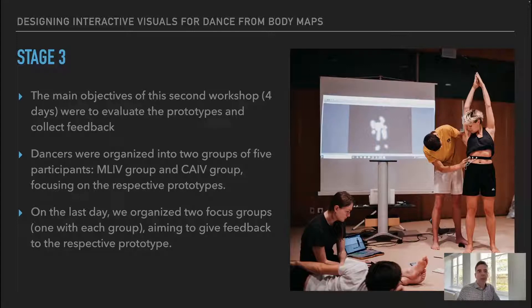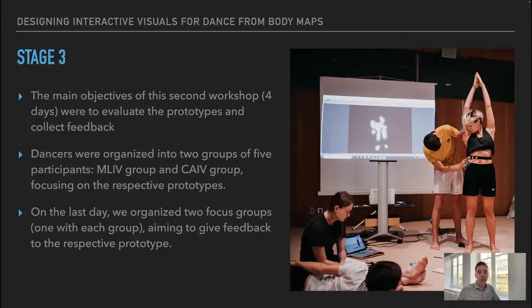Stage 3. The main objectives of this second workshop, four days, were to evaluate the prototypes and collect feedback. The participants were organized into two groups of five: the MLIV group and the CAIV group, focusing on the respective prototypes. On the last day, we organized two focus groups — one with each group — aiming to give feedback to the respective prototype.